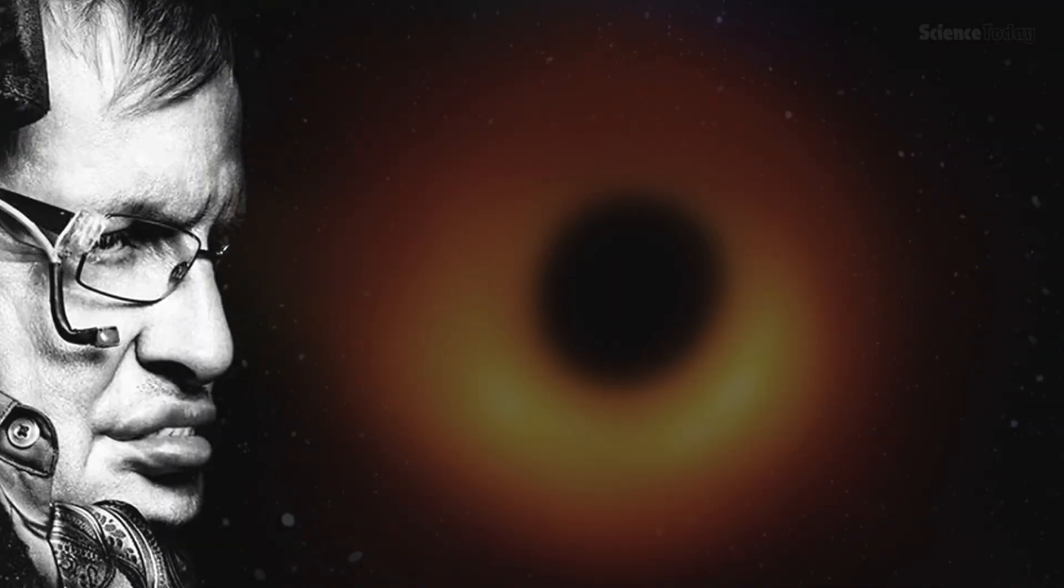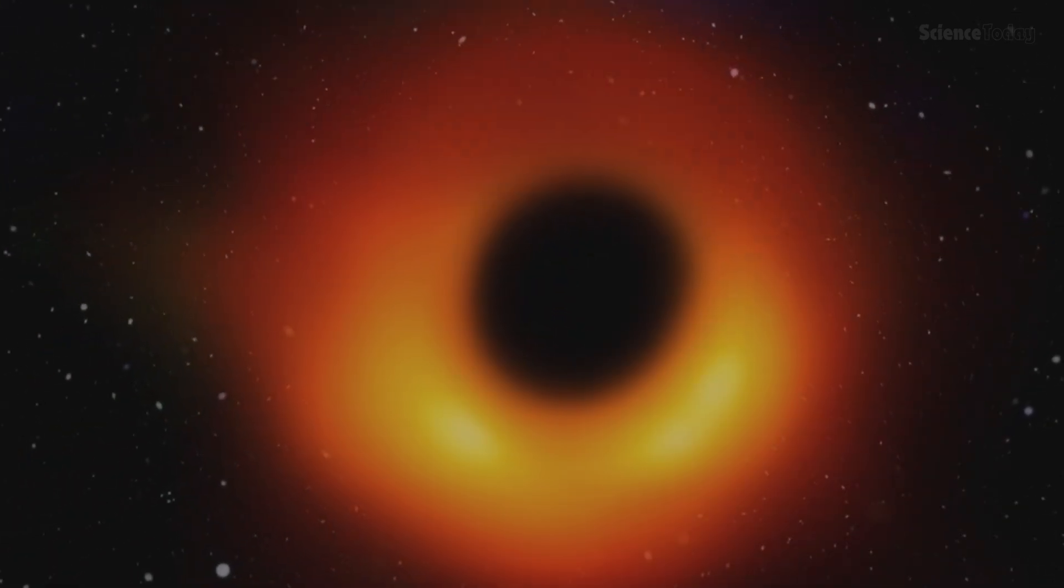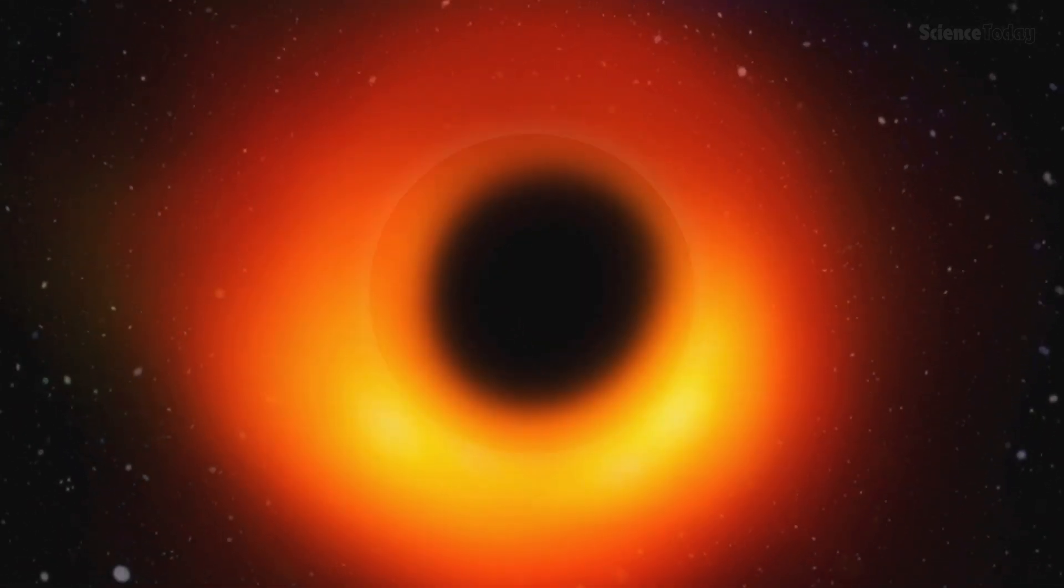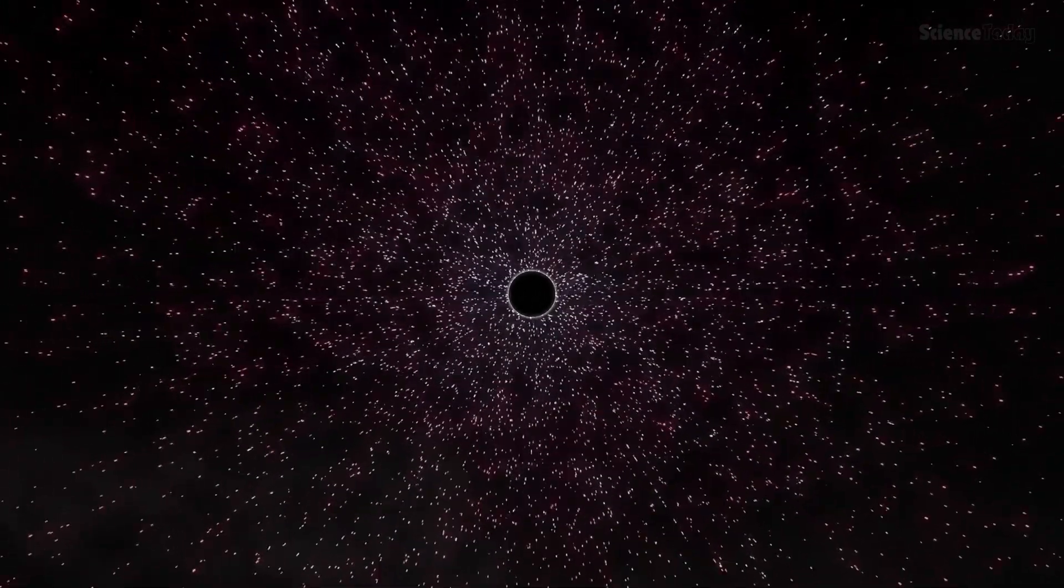In 1974, Stephen Hawking made a groundbreaking discovery that revolutionized our understanding of black holes. He revealed that black holes can actually evaporate. Like a puddle under the scorching sun, they slowly shrink, particle by particle, until nothing remains.